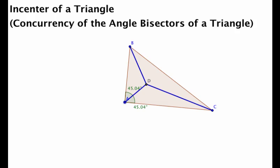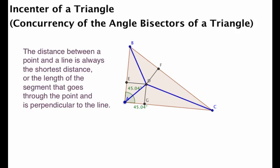And then another interesting property is that if we find the distance between the incenter and each one of the sides of the triangle, and remember when we say distance, we mean shortest distance.